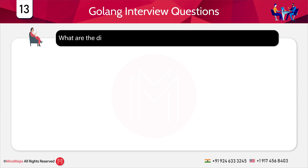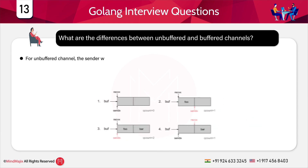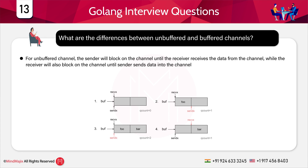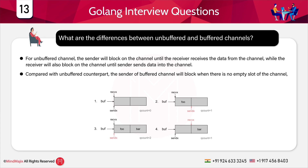What are the differences between unbuffered and buffered channels? For an unbuffered channel, the sender will block the channel until the receiver receives the data, while the receiver will also block until the sender sends the data. For a buffered channel, the sender will block when there is no empty slot in the channel, while the receiver will block on the channel when it is empty.